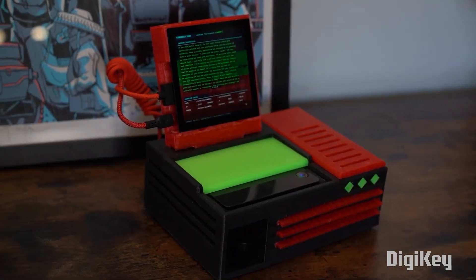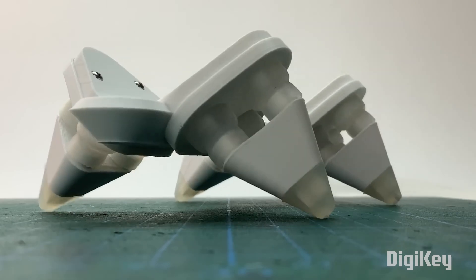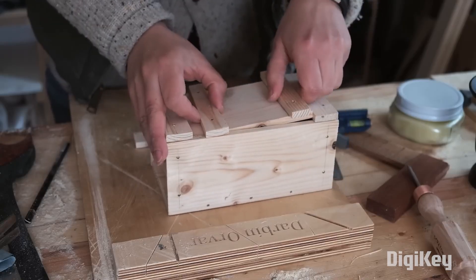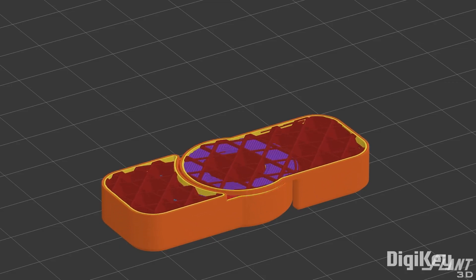This week on Maker Update, the cyberdeck who killed your character, wiggly robots, boxes without hinges, and hinges without hardware.